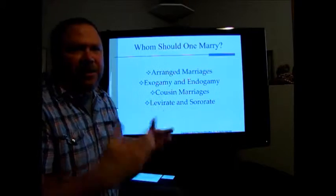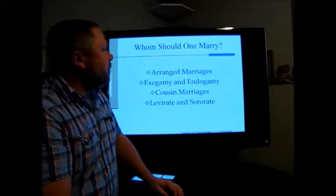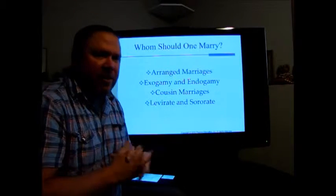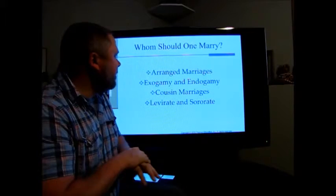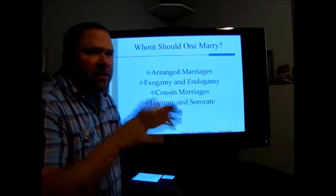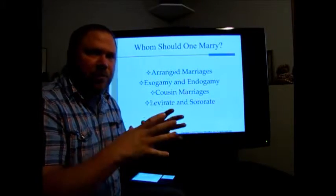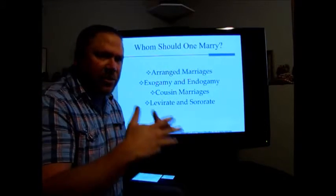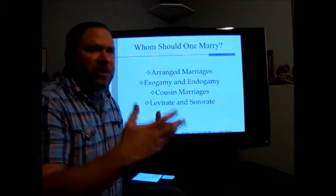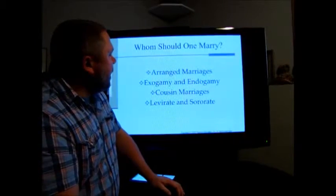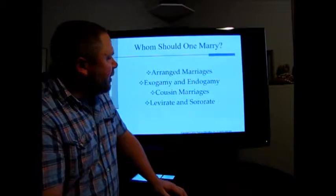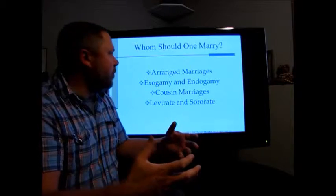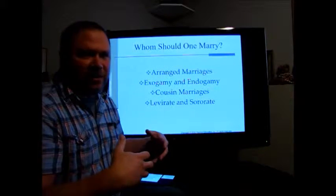There's also variation in whom one should marry. You've probably heard of arranged marriages — we don't have that here in the United States, but it's where the parents of the bride and groom bring the two children together, usually for economic union or social status reasons. There's also exogamy — marrying outside of a certain kin group — and endogamy — marrying inside a certain kin group.